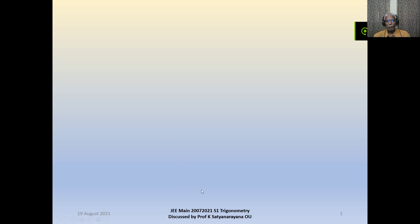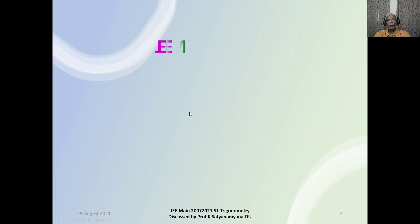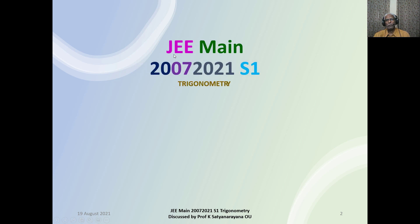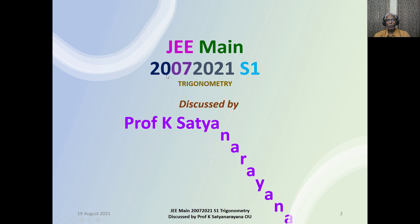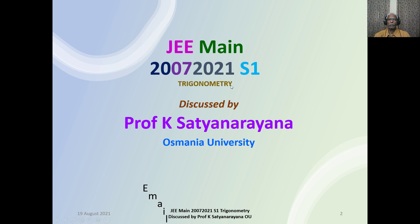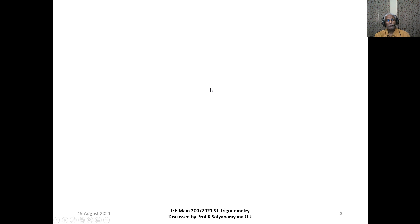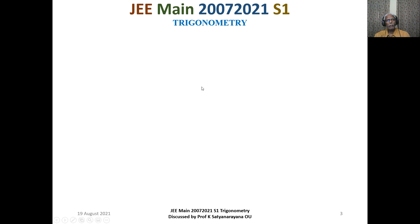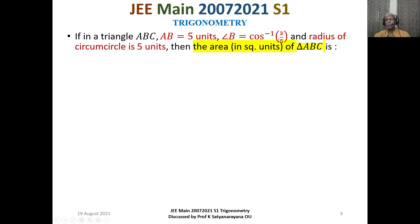We consider a problem from trigonometry that has appeared in a recently conducted Joint Entrance Examination Main. The question is from JEE Main held on 20th July 2021 in the morning shift. The question is: in a triangle ABC, side AB is equal to 5 units, angle B is equal to cos inverse of 3 by 5, and the radius of the circumcircle is 5 units. Find the area of triangle ABC in square units.